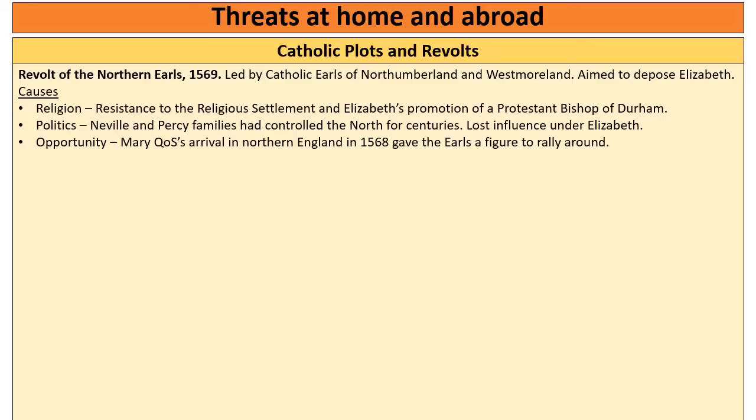The Earls of Northumberland and Westmoreland belonged to the Neville and Percy families. For hundreds of years these families had been very important to the north of England, basically ruling it on behalf of the monarch. However, because they were Catholic, they had lost their power under Elizabeth and been replaced by Protestants. So these families wanted to rebel to try and get their power back. And in 1569 they saw an opportunity because Mary had arrived, giving the Earls a figure to rally around — someone with whom they could replace Elizabeth.